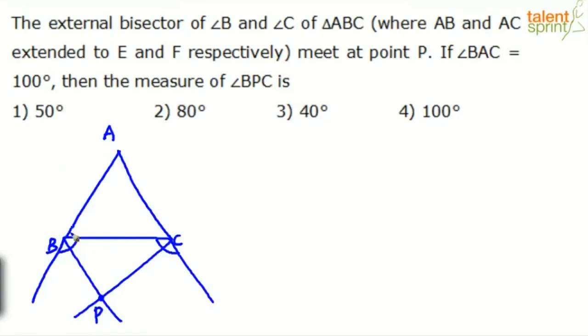He says if angle BAC, angle BAC is what? 100 degrees. If angle BAC is 100 degrees, then the measure of angle BPC, this angle is equal to what? Now if you go by that property like I told you, angle BPC will be equal to 90 degrees minus half of angle BAC. That's it.